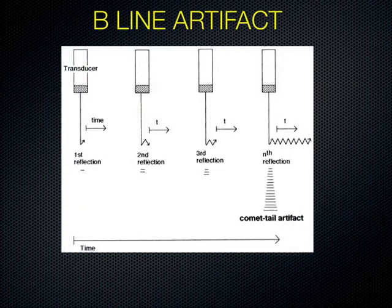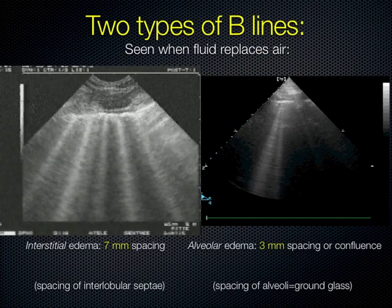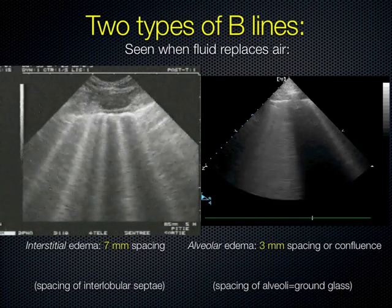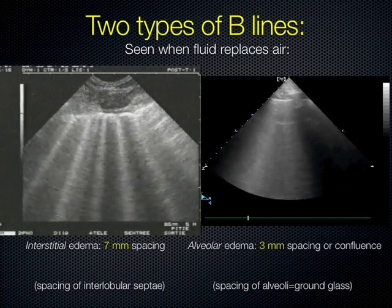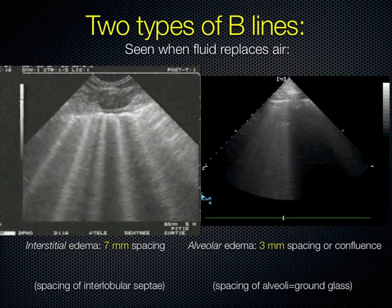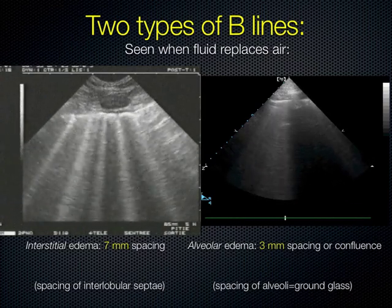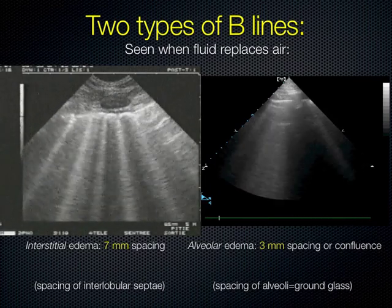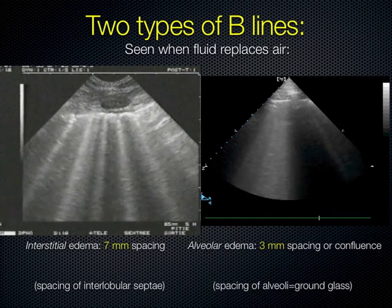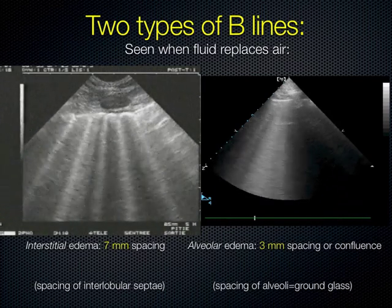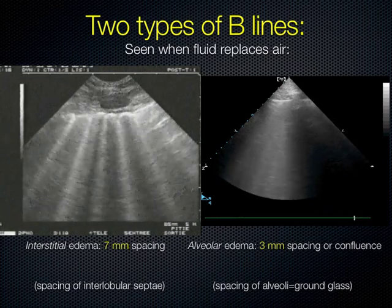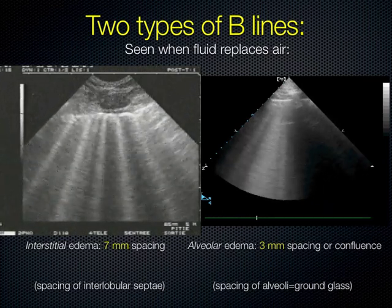You'll see two different types of B lines. The more gross appearance on the left is interstitial edema — fluid in the interlobular septae but maybe not in the alveoli yet — and those tend to be spaced about seven millimeters apart at the chest wall. The finer, more diffuse appearance on the right is when you progress from interstitial edema into alveolar edema, or ground glass, where the fluid is actually in the alveoli — spaced only about three millimeters apart, giving a diffuse B line pattern.